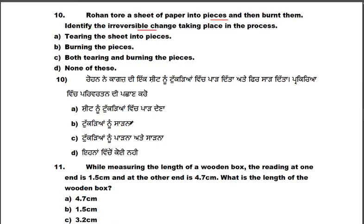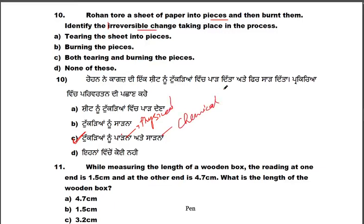When Rohan tore the sheet, that is basically a physical process — it is reversible because you can join the sheets back together. But when he burnt the pieces, that is an irreversible change — a chemical change took place. So the irreversible change here is burning the pieces.